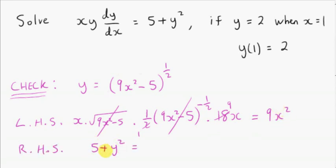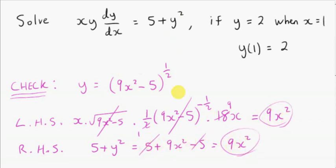Now let's look at the right-hand side. The right-hand side is 5 plus y squared. So 5 plus this thing squared — if you square it, you just get 9 times what's inside the brackets. So we see that the left-hand side is equal to the right-hand side, confirming this is the correct solution. And as I've said, if you plug 1 in for x, you get 9 minus 5 is 4 — the square root of 4 is 2 — so the boundary condition is satisfied.